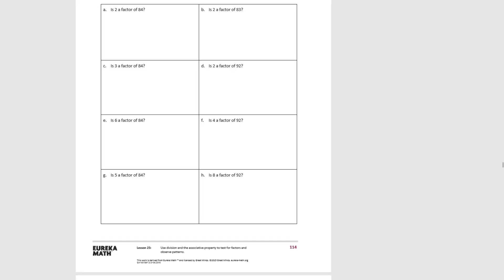This says: explain your thinking or use division to answer the following. For 1a, this is an easy one because we see that the number we're looking at, 84, has a 4 in the ones place, which is even. So we automatically know that 2 is a factor — 84 is even, so 2 is a factor.